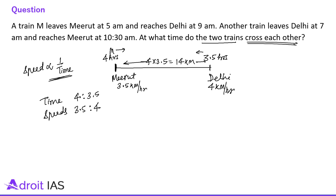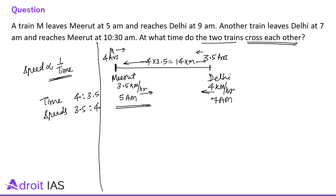Assume the distance between Meerut and Delhi is 4 multiplied by 3.5 = 14 km. Then their speeds are 3.5 km per hour and 4 km per hour respectively. Train M starts at 5 AM and the other starts at 7 AM. From 5 AM to 7 AM (2 hours), Train M covers 3.5 multiplied by 2 = 7 km towards Delhi.